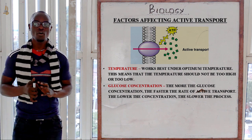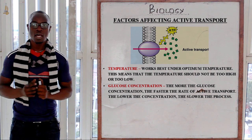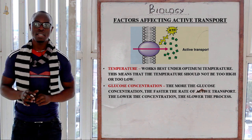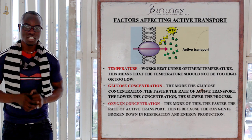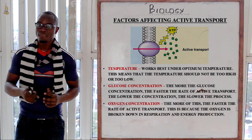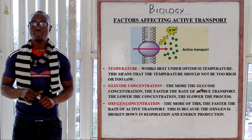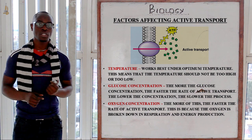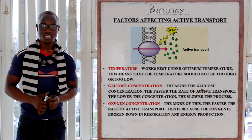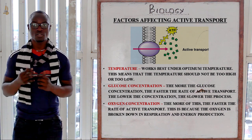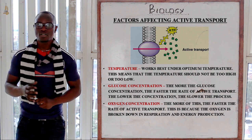If we have a low amount of glucose concentration, active transport will be low in performance. Next, let's look at oxygen concentration. Oxygen must be present for respiration to take place and for the production of energy. With this energy, active transport is going to work in the desired way.